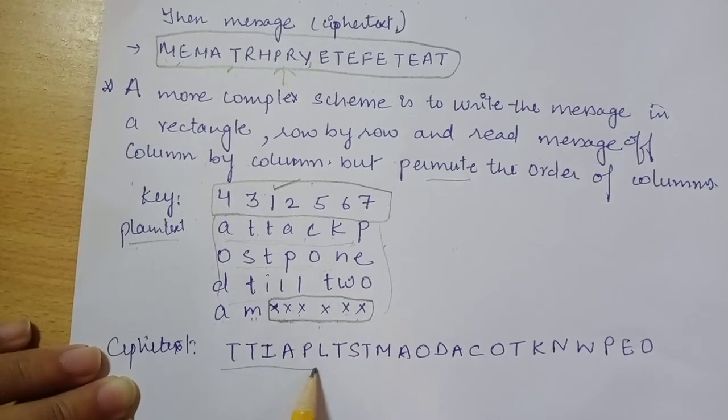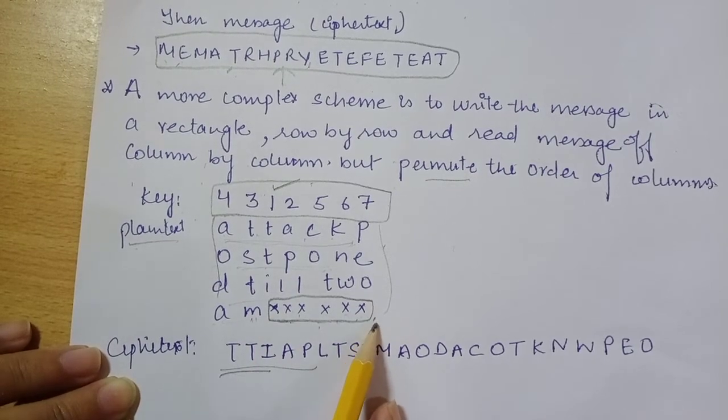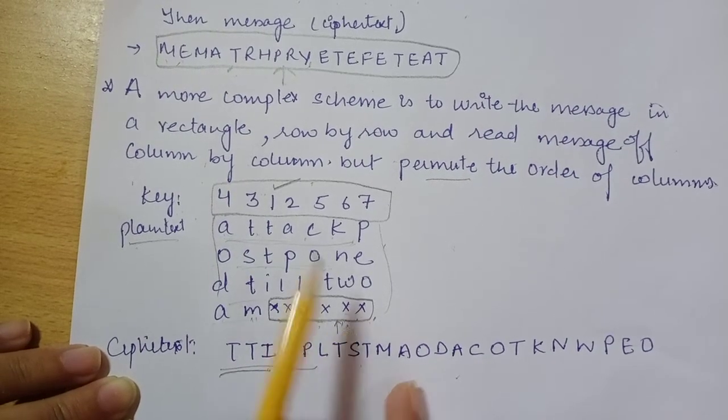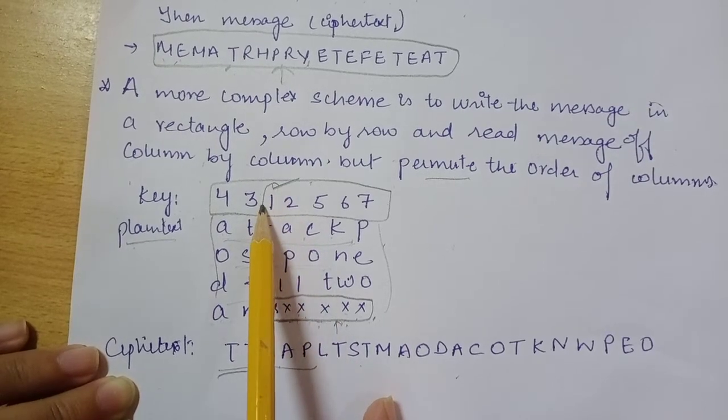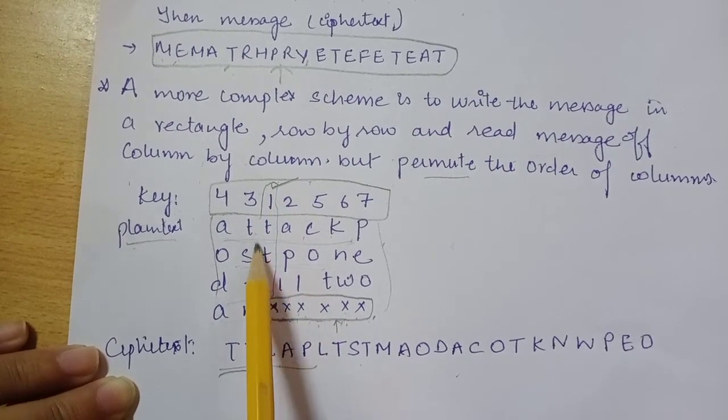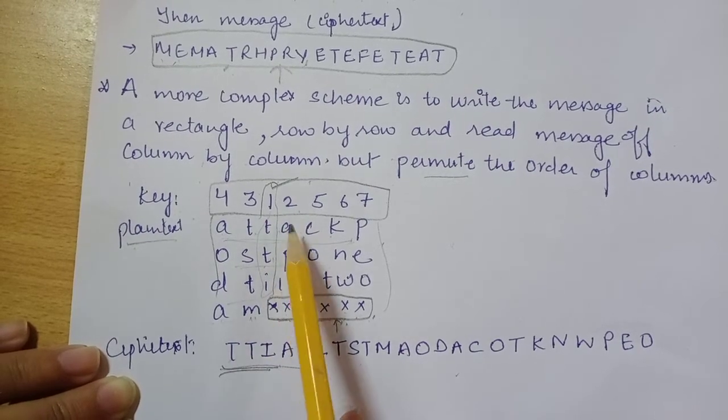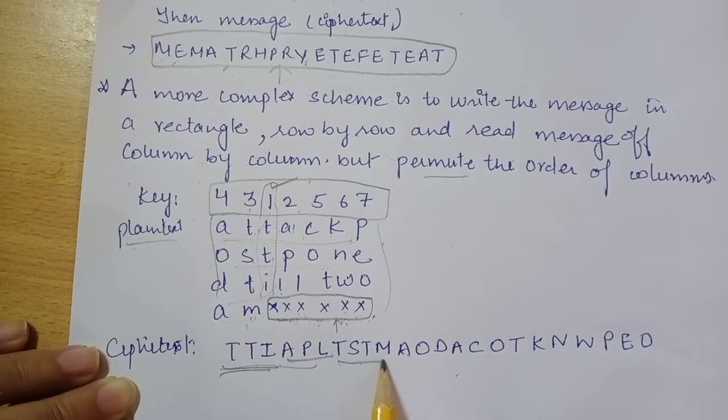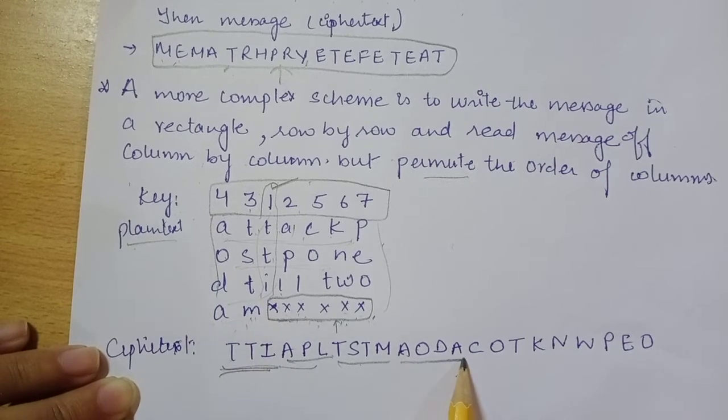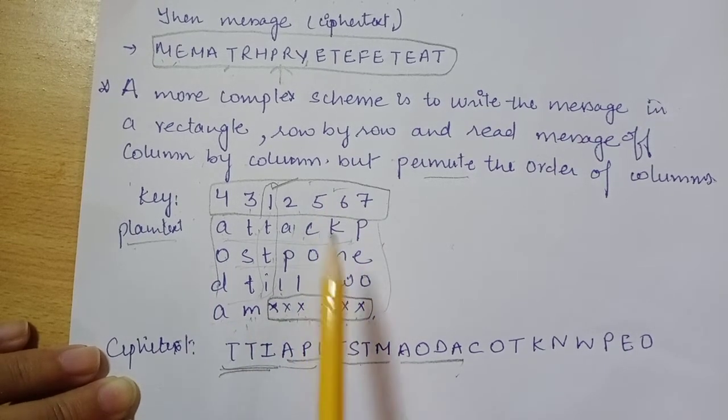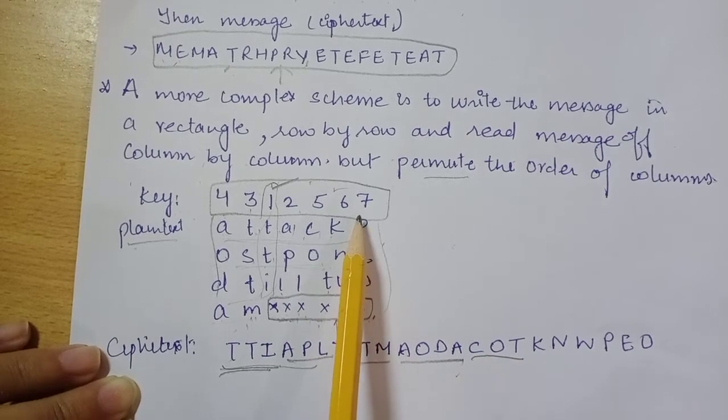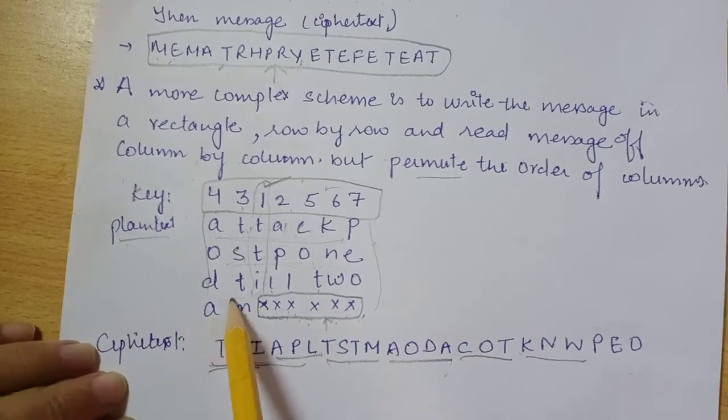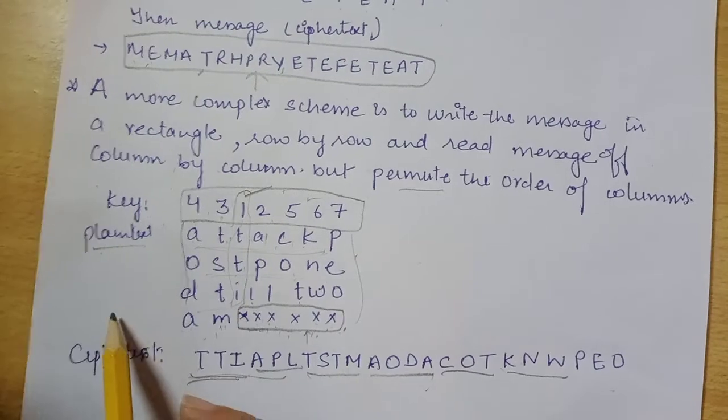So it will become TTI, then the second APL, then the third one TSTM, then the fourth AODA, then fifth COT, then the sixth KNW, and the seventh PEO. Now in this case, as we change the key, so the ciphertext will change.